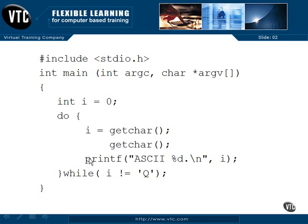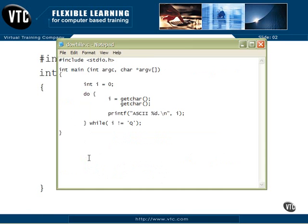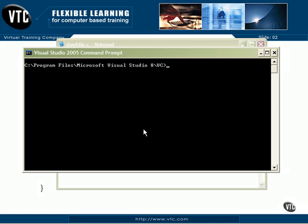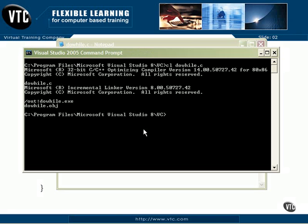So let's go take a look at it. There's the code, what we just looked at. While I is not equal to Q, we'll go over to our compiler and we'll compile and link DO WHILE. There it's linked up. Now let's run it.